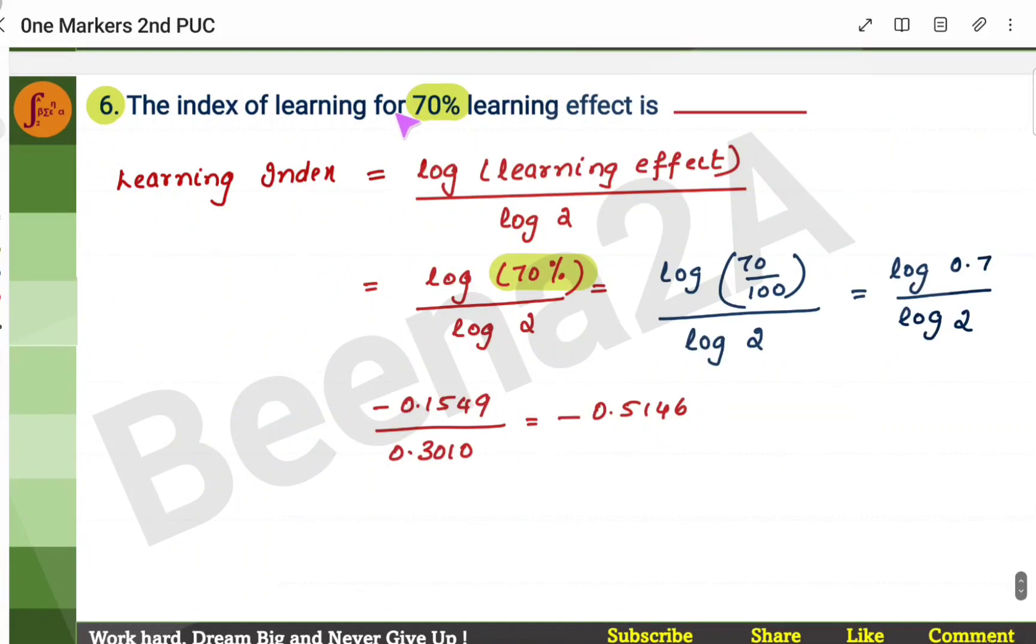Another problem. The index for learning for 70% learning effect is—you have to find the learning index. What is the formula for learning index? Log of learning effect by log of 2. 70% is given. So, log of 70% by log of 2. Convert the 70%, 70 by 100.